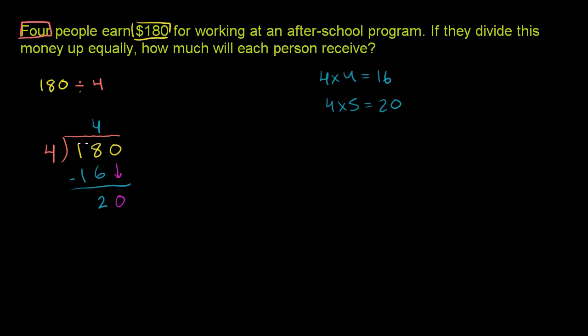But if you just think about the process, you say, what's the smallest? If I just go with the 1, 4 doesn't go into it, so let me move on. So let me look at the 1 and the 8. 18, 4 goes into that 4 times. 4 times 4 is 16. Subtract from 18, you get a 2.